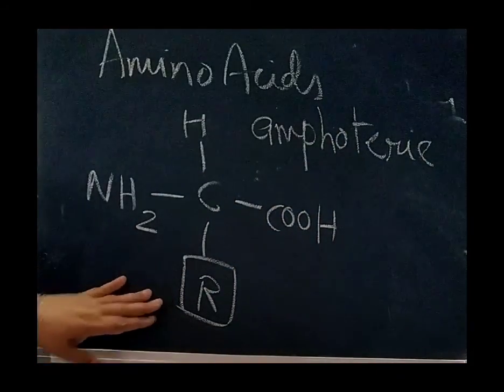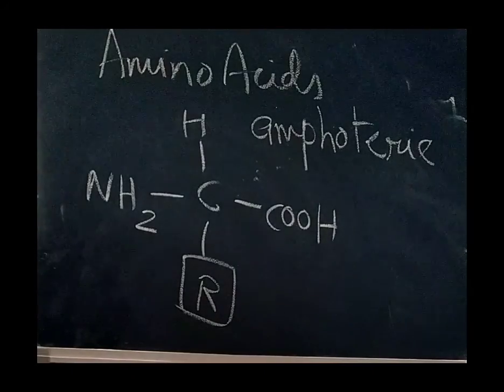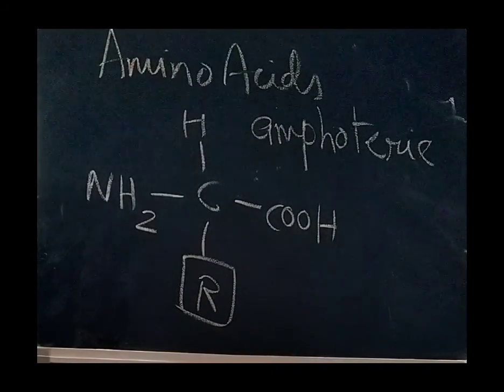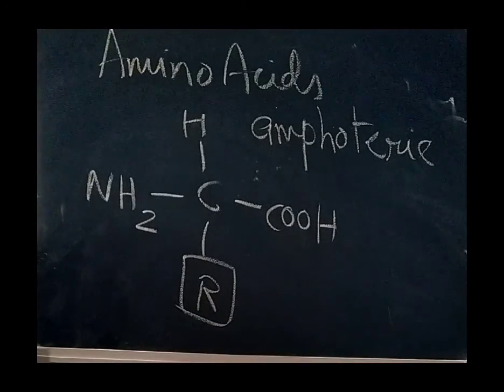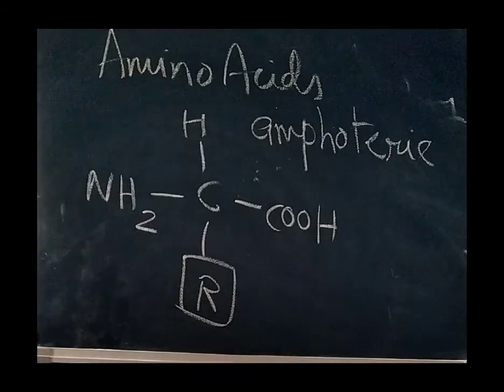The R group is variable. This can be hydrogen, methyl, hydroxyl methyl. So the chemical and physical properties of amino acids are essentially due to the amino, carboxyl and R functional groups present.